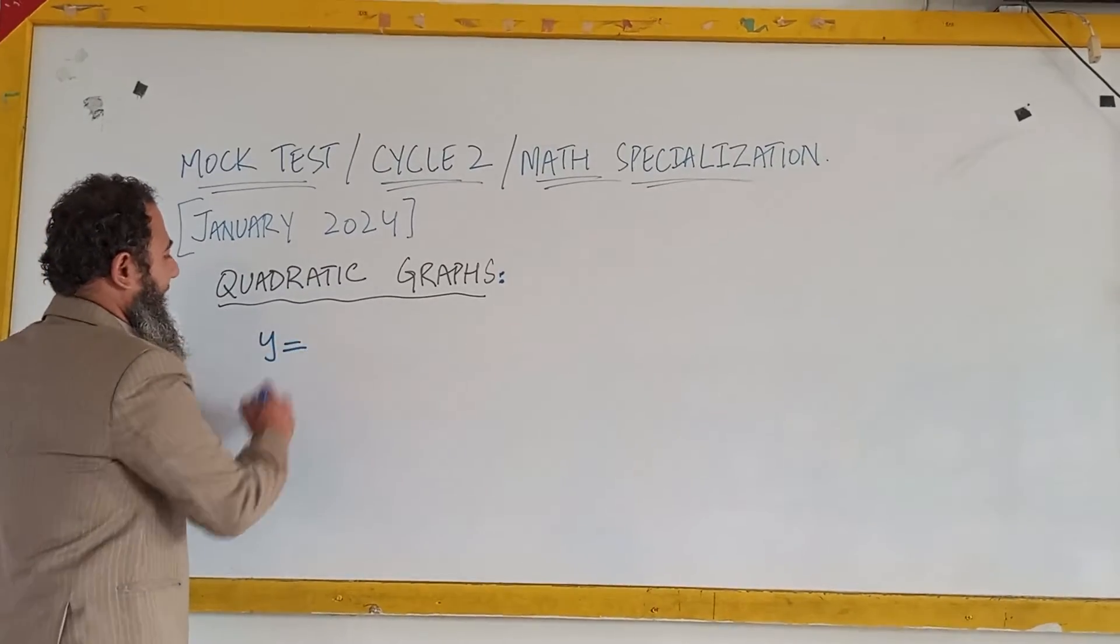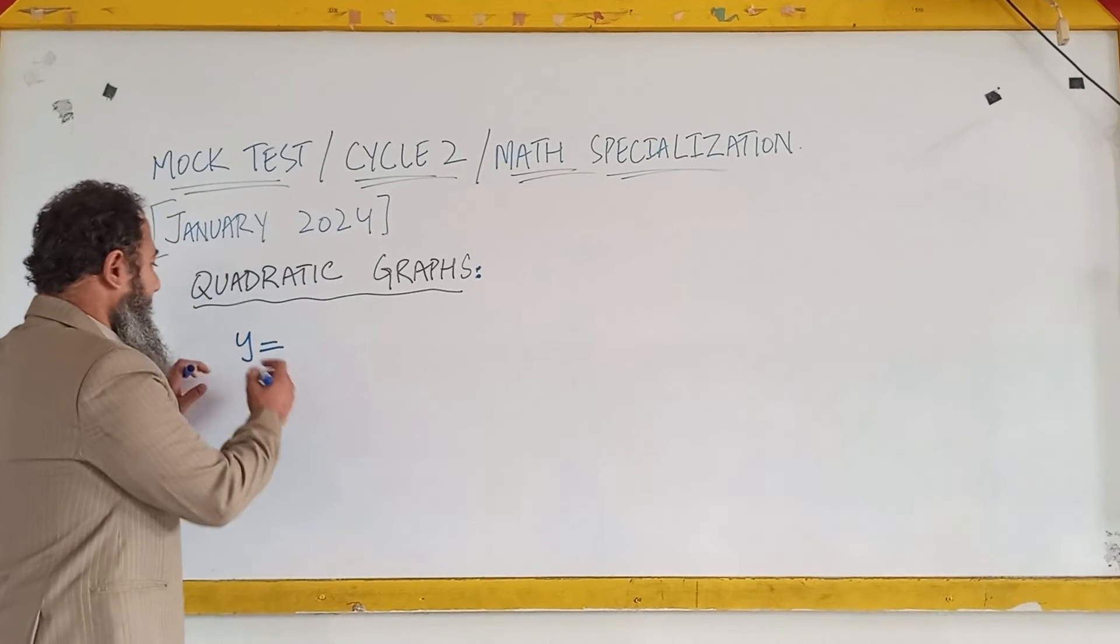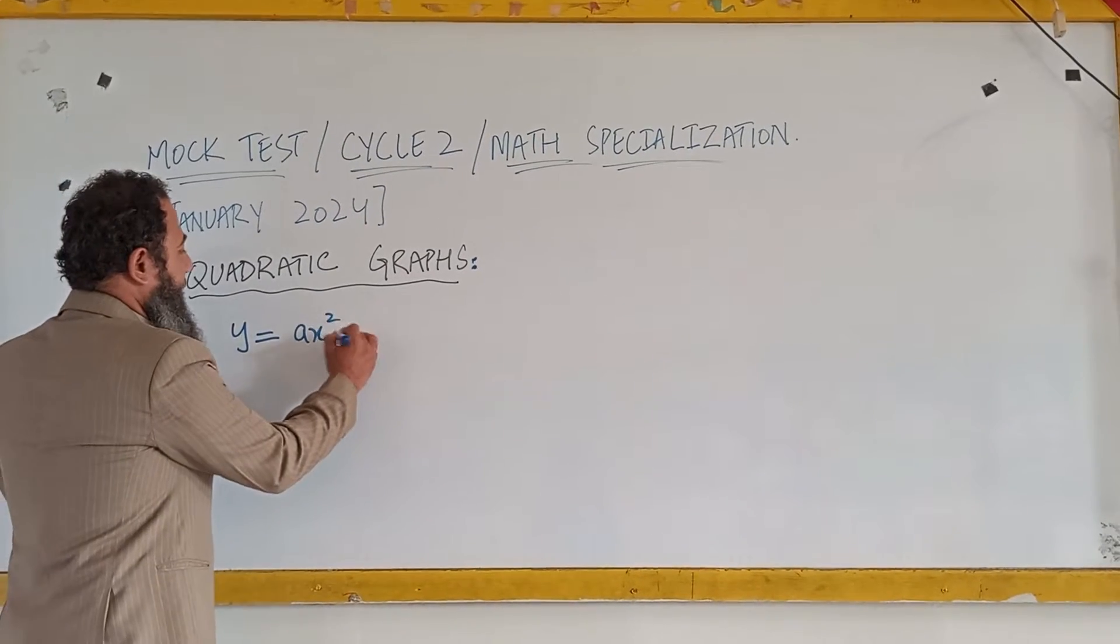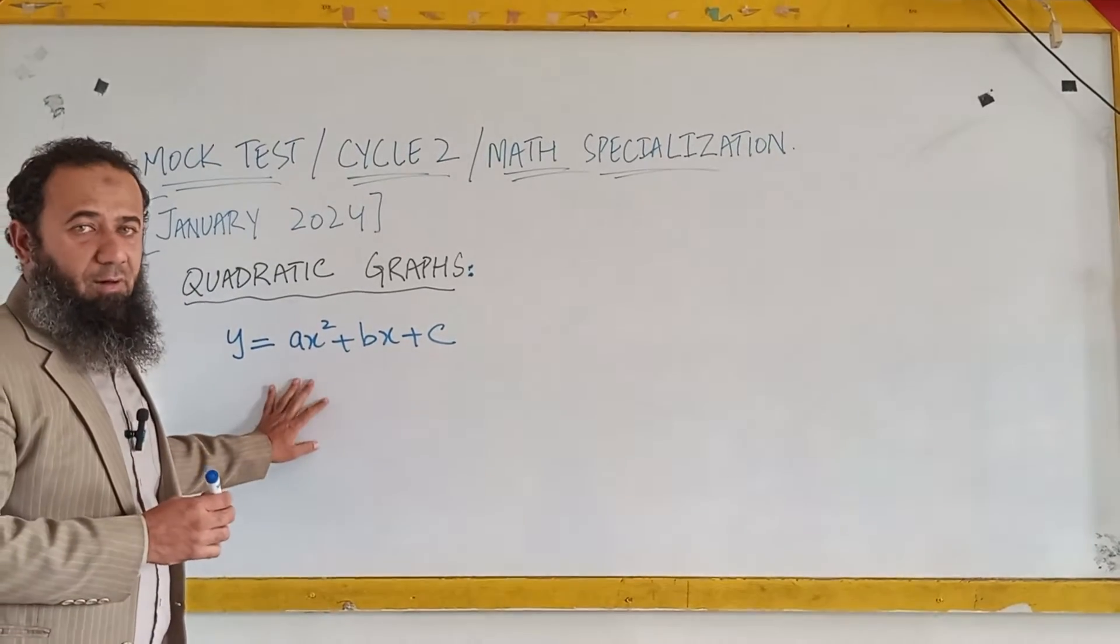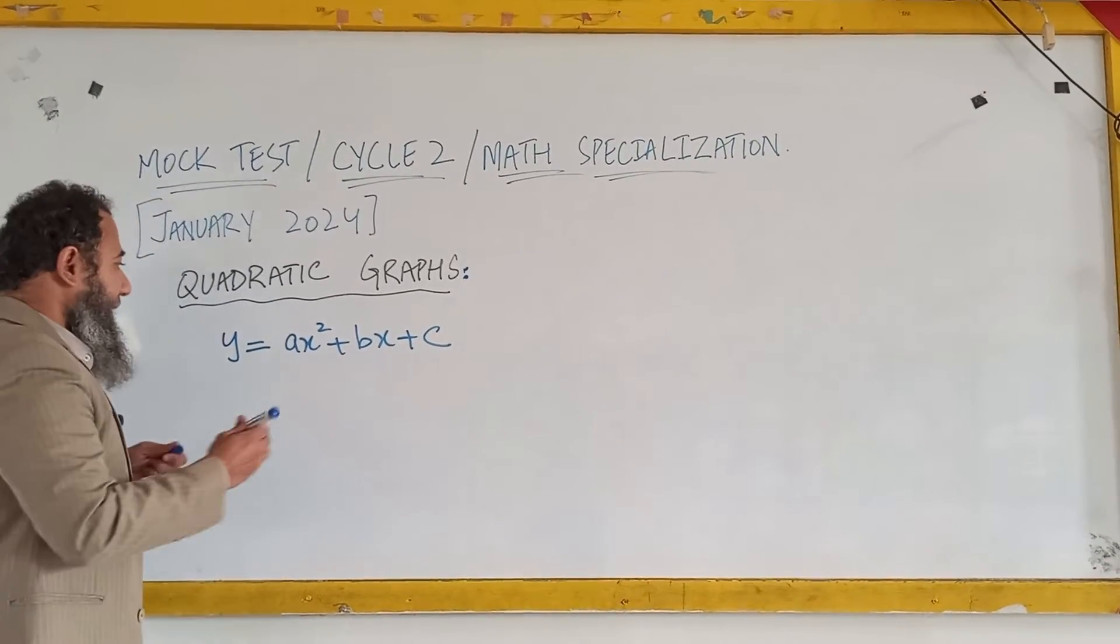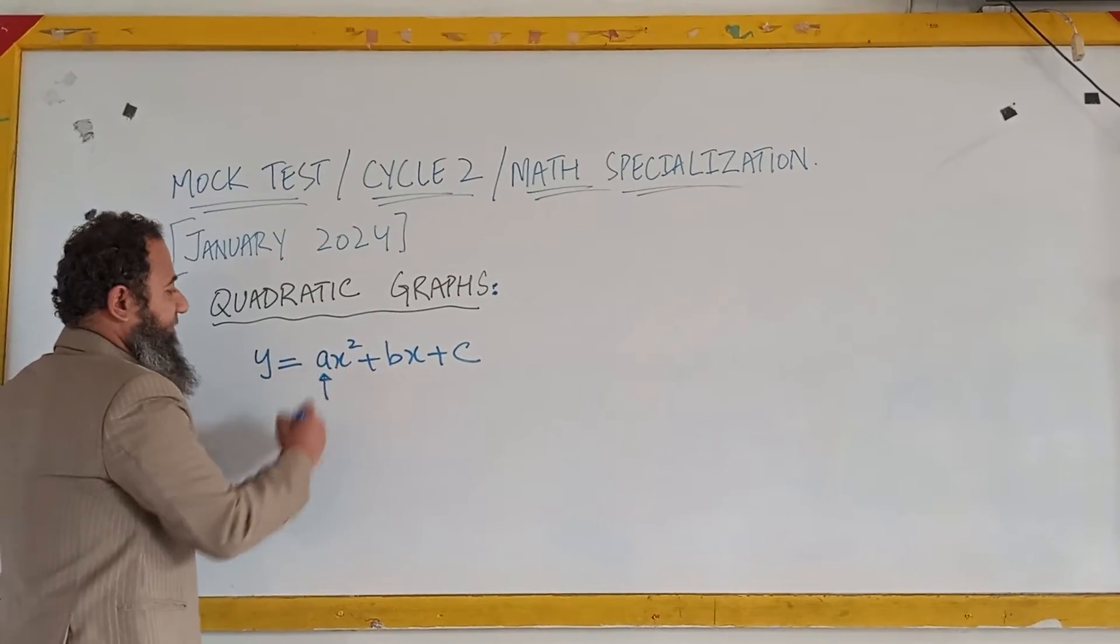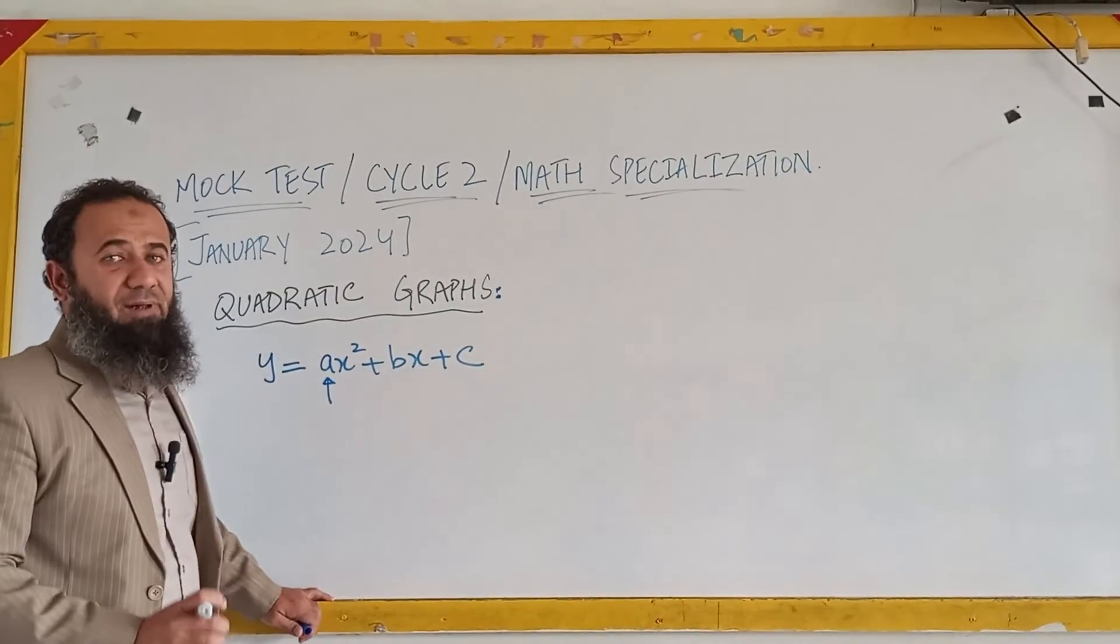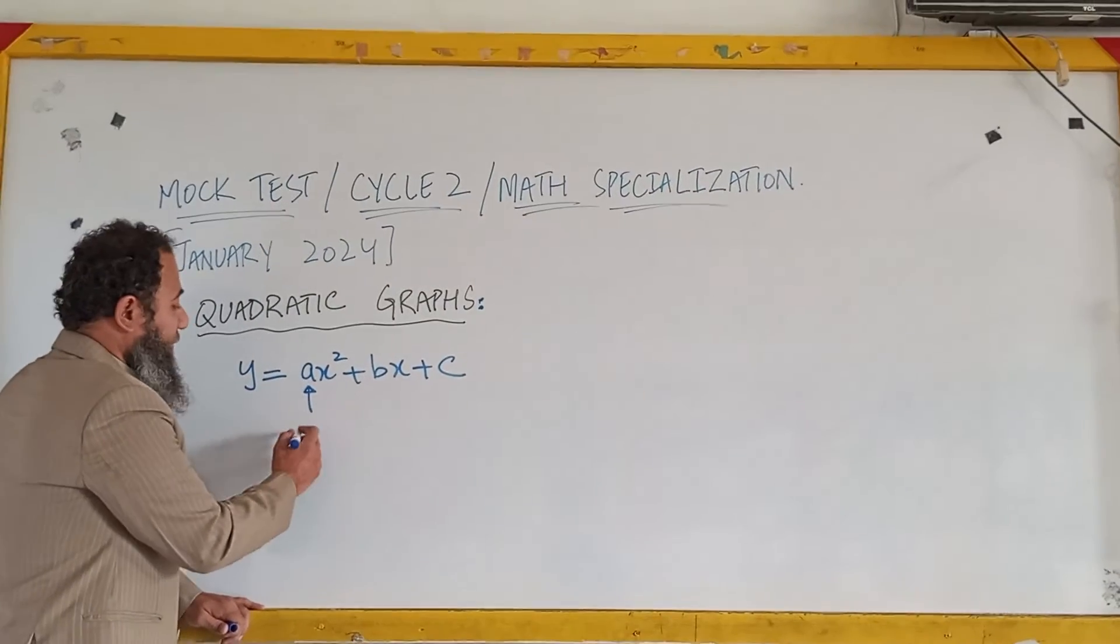First of all, we need to understand what is the general form of a quadratic equation. So y equals to ax square plus bx plus c - this is called the general form of a quadratic equation. We need to understand two things, like if the coefficient of x square, that is written as a.